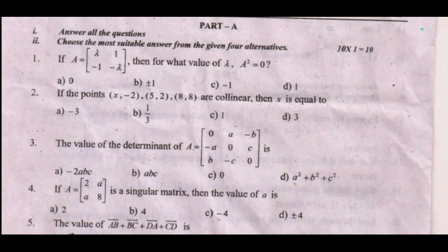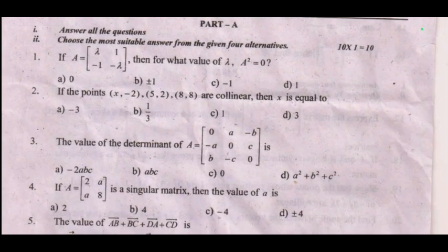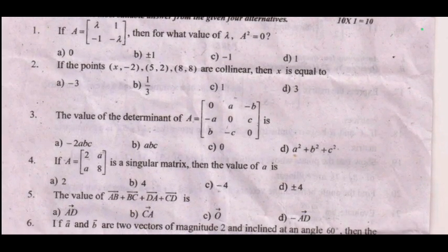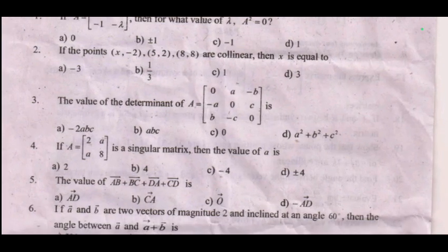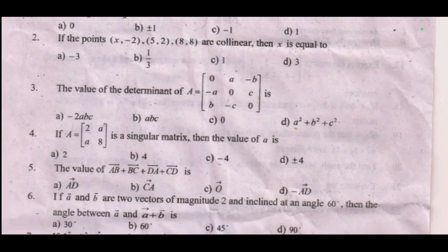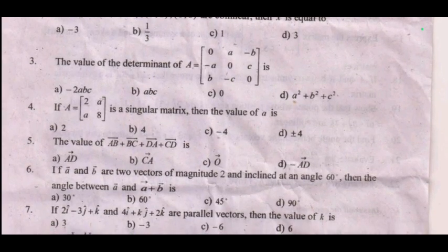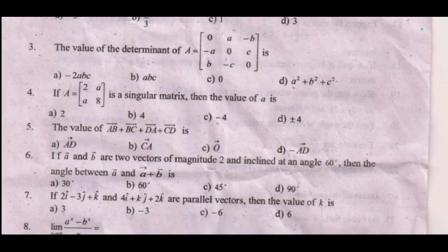First one: for what value of gamma? Second one: if the points (x, -2), (5, 2), (8, 8) are collinear, then x is equal to dash. Third one: the value of the determinant of A is equal to? Fourth one: if A equals 2a, a8 is a singular matrix, then the value of a is dash.